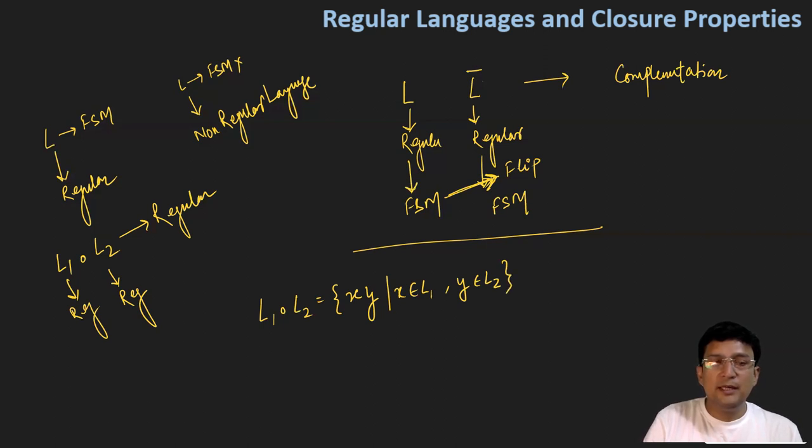Similarly, we saw that if we have a language L1 and a language L2, and L1 and L2 both are regular, we can say that L1 union L2 is regular. L1 union L2 means we have a string x that will either be part of L1 or it will be part of L2. We can prove that if L1 is regular and L2 is regular, L1 union L2 has a finite state machine, so L1 union L2 is regular.